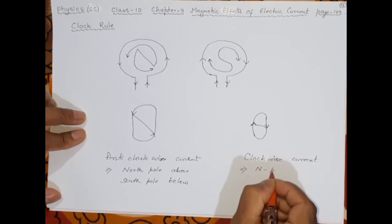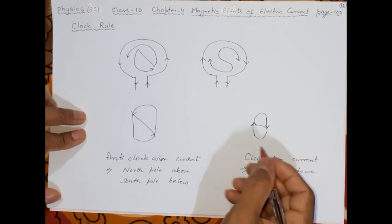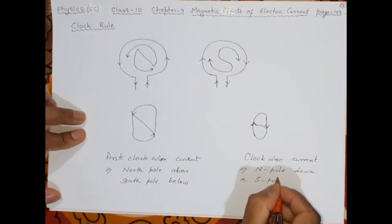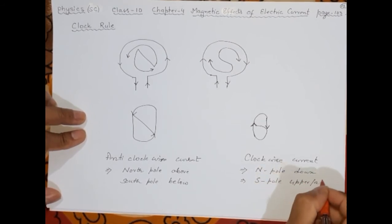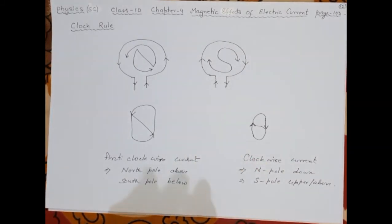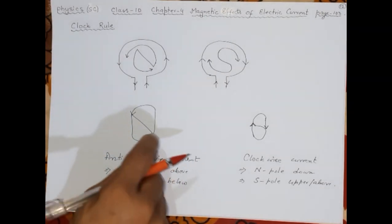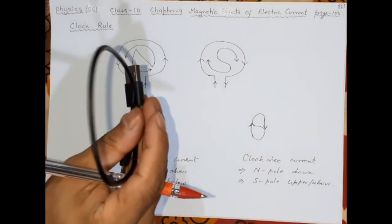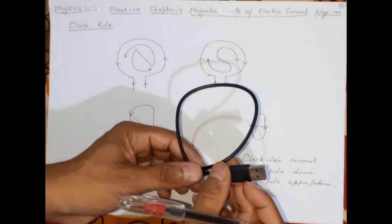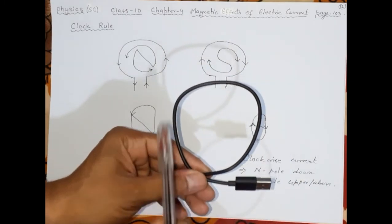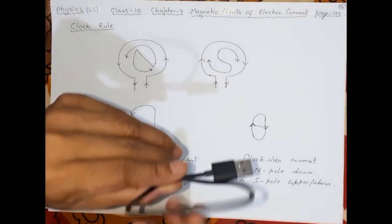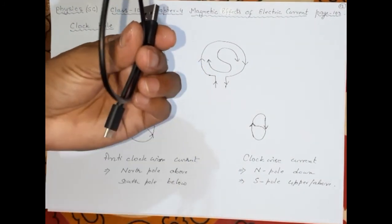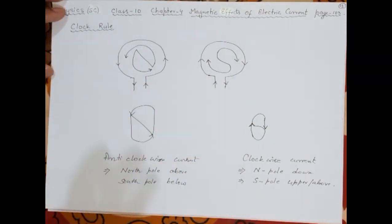So this is the rule to remember: whenever a current is going in a circular loop, that wire will behave like a magnet. The question is which side is the south pole and which side is the north pole, and the clock rule tells you. If current is going anti-clockwise in a wire, this side is the north pole and the other side is the south pole. If current is going clockwise, this side is the south pole. This is called the clock rule.